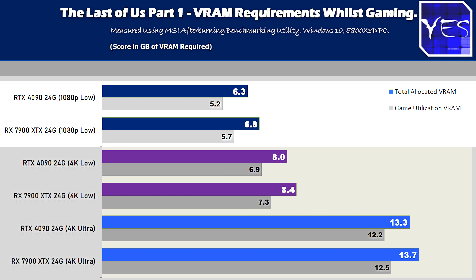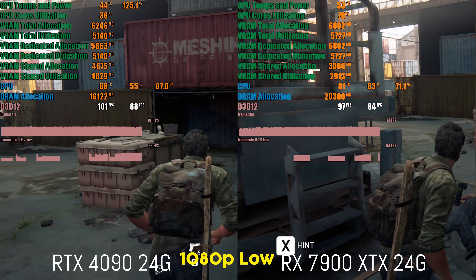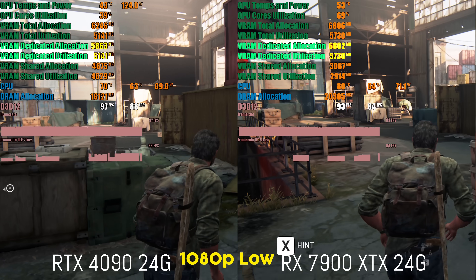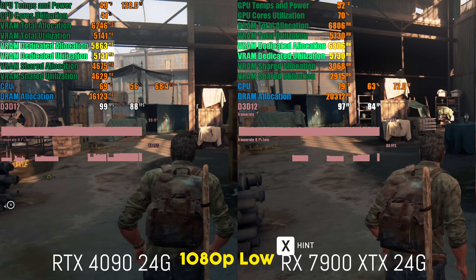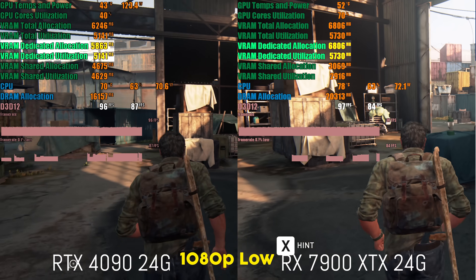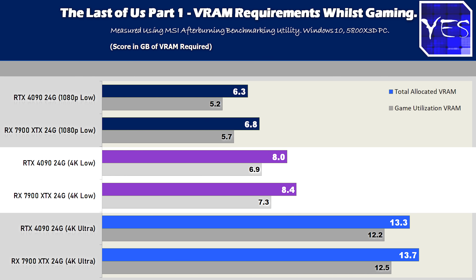Utilization is approaching six gigabytes of VRAM at 1080p lowest settings at 100% screen resolution. When we go up to 4K at least low settings, the VRAM requirements go up at a minimal rate — on the NVIDIA side going from 5.2 gigabytes utilization to 6.9, then eight gigabytes total allocation. On the AMD side it was a similar story with 7.3 and 8.4 in total. So basically for 4K low settings on The Last of Us, you'll want at least eight gigabytes of VRAM.